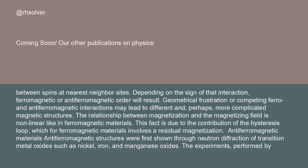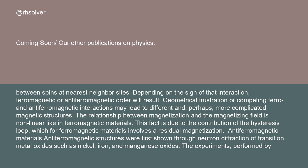Antiferromagnetic structures were first shown through neutron diffraction of transition metal oxides such as nickel, iron, and manganese oxides. The experiments performed by Clifford Shull gave the first results showing that magnetic dipoles could be oriented in an antiferromagnetic structure.